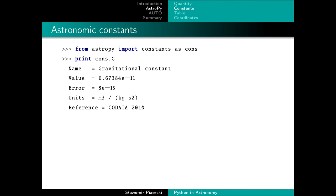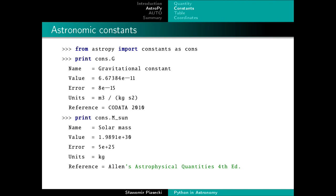In astronomy and physics you also need constants, which are also available in AstroPy. For example, the gravitational constant: when you call it, you get the value, its uncertainty, the units, and a reference where you can find its definition. Another important constant is solar mass — a very large value — and since the Sun is actually an average-sized star, when we determine the mass of any star we express it in units of solar mass.